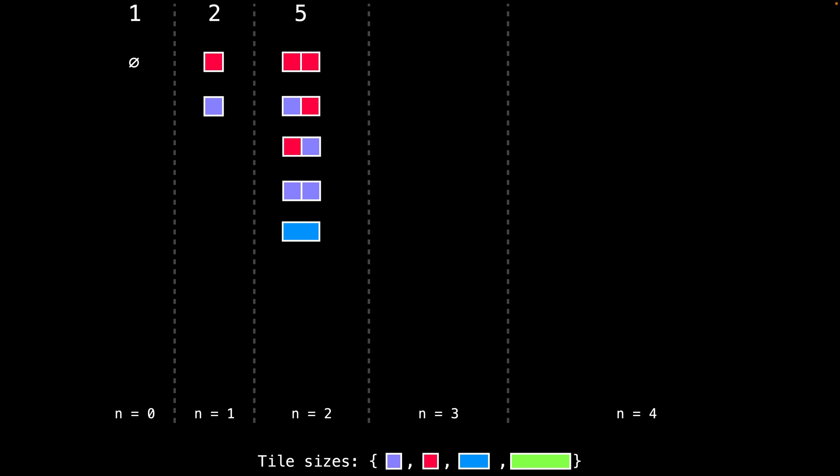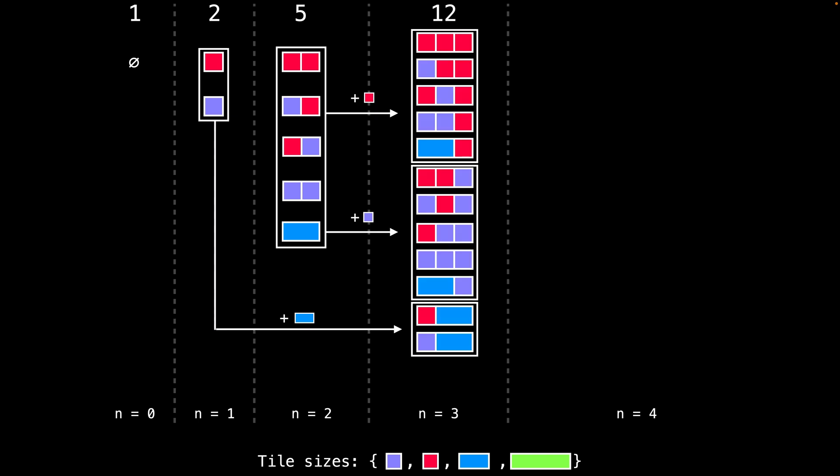Next, we are going to construct all boards of length three. Similar to before, we're going to use all the board tilings of length two to create boards of length three by adding a red and purple tile. We are also going to reuse all boards of length one plus a blue tile to create a board of length three. You may already be seeing a pattern here. But essentially, for every block of length k that fits on the board, we are going to add on all the solutions from k columns ago and add them to the current tiling count. So in this situation, there is 5 + 5 + 2 for a total of 12 tilings of length three.